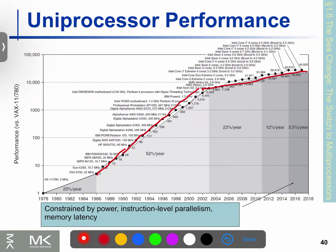The unique processor performance is based on a single processor executing one instruction at a time — for example, instructions A, B, C.